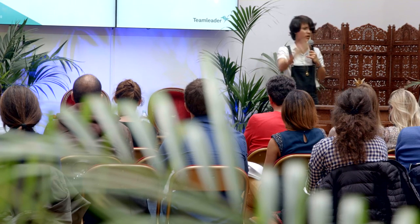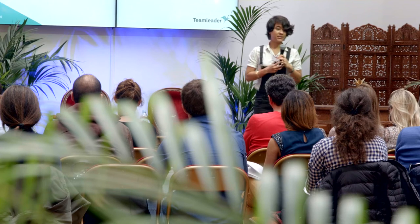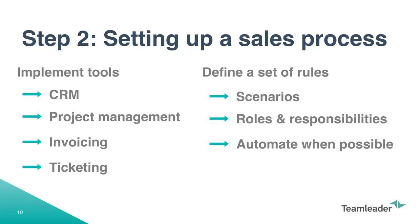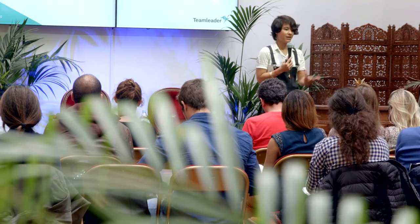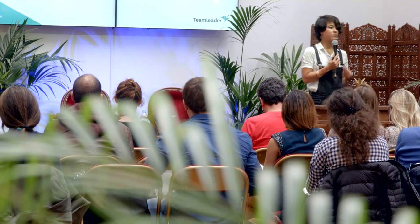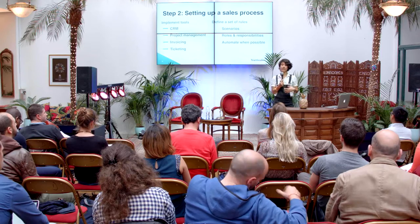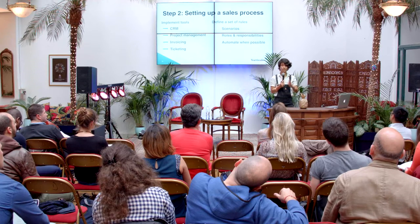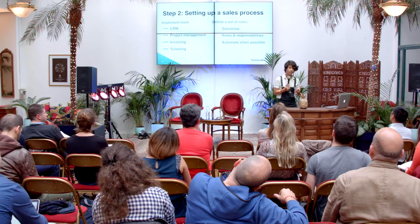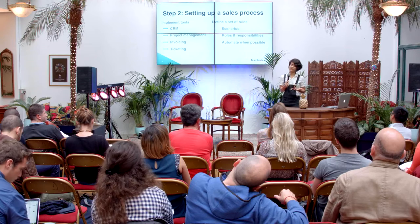Roles and responsibilities should be crystal clear — each sales rep should know exactly what to do when a given scenario happens and a given buying persona comes in. You should also automate as much as possible — first, to ensure scalability, and second, to make life easier and enable your sales reps to focus on what really matters. If you don't need a person spending a lot of time on one phase and you can automate it, then do it from the beginning. Make sure your process can grow quickly and saves you time and resources as you go along.